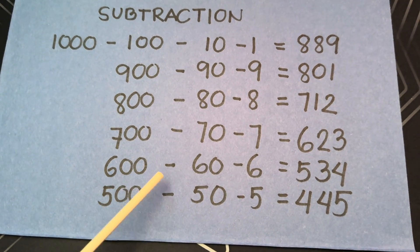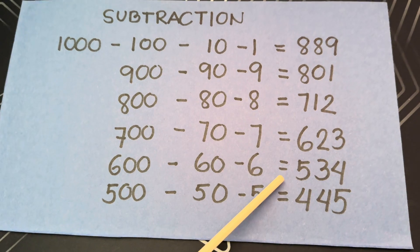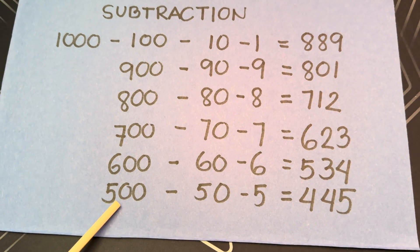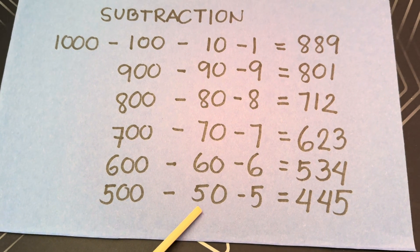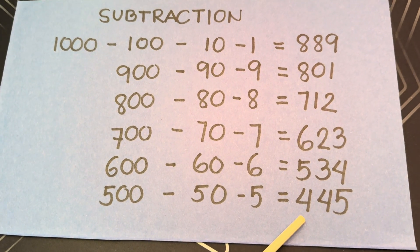600 minus 60 minus 6 is equals to 534. 500 minus 50 minus 5 is equals to 445.